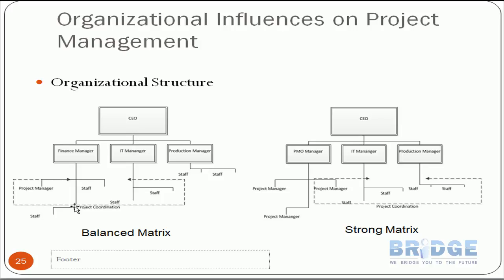In the balanced matrix, staff now reports to two managers: their functional manager and their project manager. Authority is balanced between both, which is why it's called the balanced matrix. However, this can create conflict in priorities, and staff still have their own daily operations alongside project work.